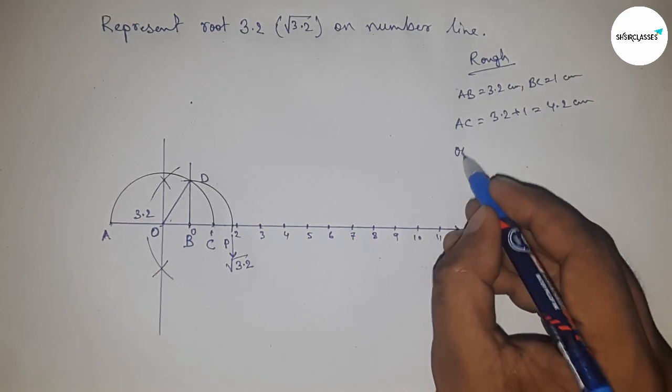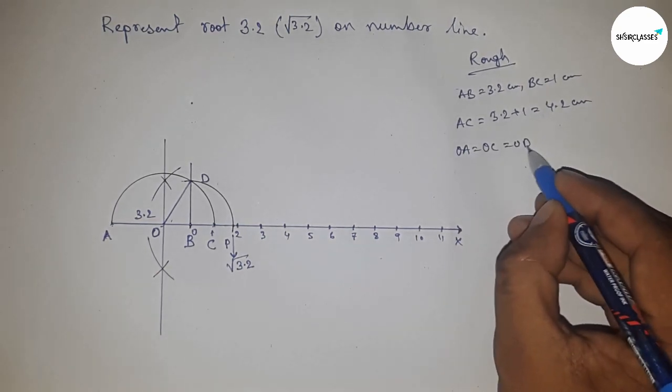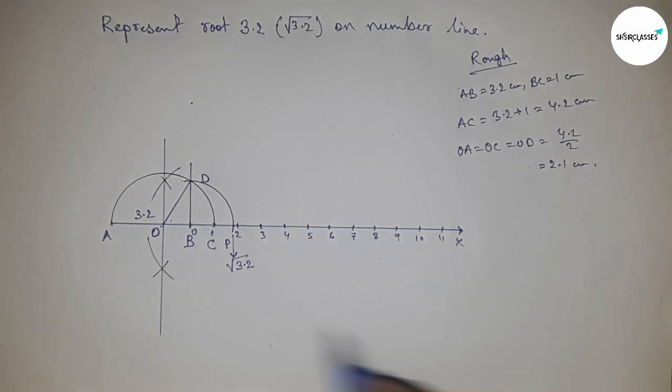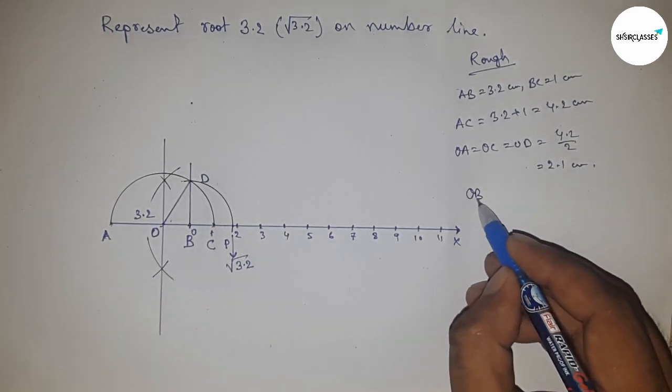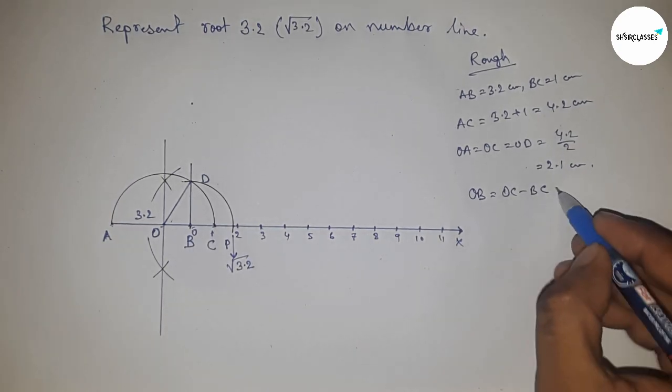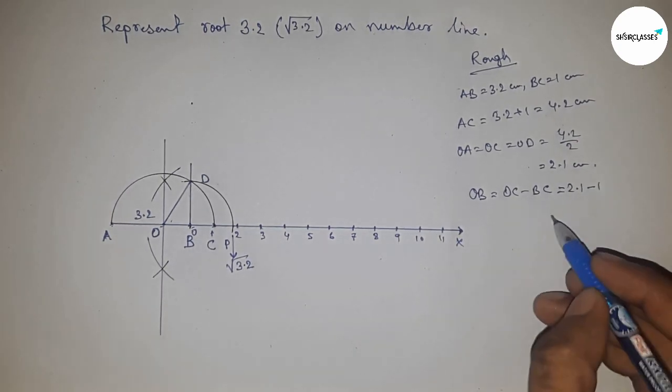The radius OA equals OC equals OD equals 4.2 divided by 2, which is 2.1 centimeters. Next, OB equals OC minus BC. Putting the values of OC and BC, this is 1.1 centimeters.